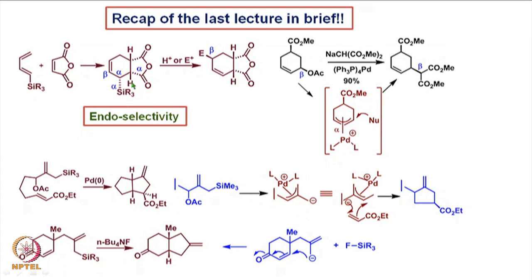Since this carbon-silicon bond is alpha oriented, the carbon-electrophile bond becomes beta oriented to avoid steric interaction. This kind of endo-selectivity is basically governed by the Diels-Alder reaction rules.